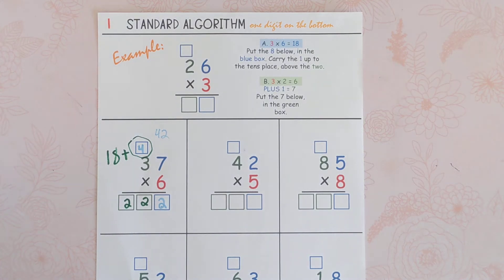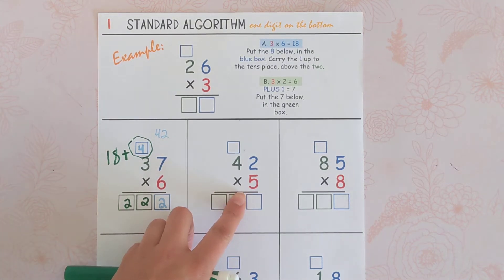Hi everybody, we are doing standard algorithm multiplication, two digits times one digit, 42 times five.